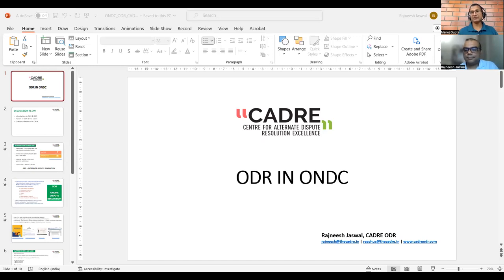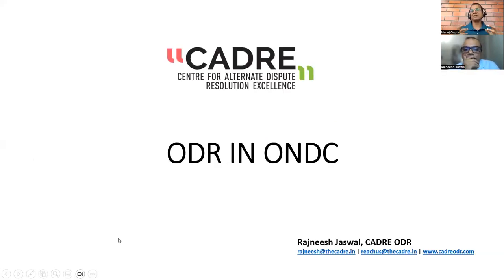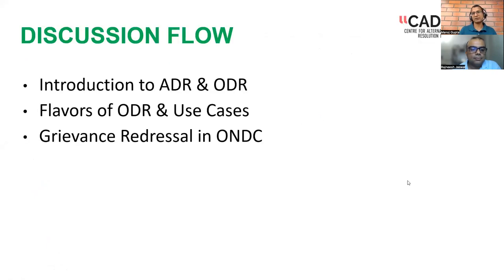IGM is getting rolled out as we are speaking. It is an MVP — minimum viable product — a bare-bone structure of IGM, but a very important step forward. It ensures that the network can provide the same level of customer trust as a platform can — a very important piece.